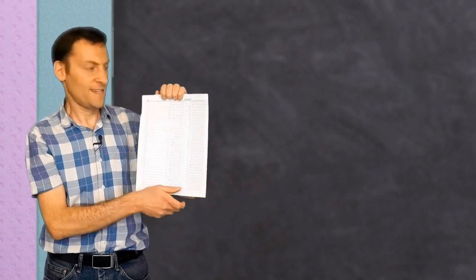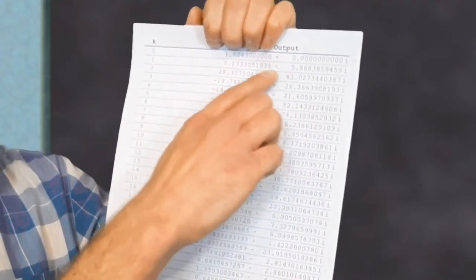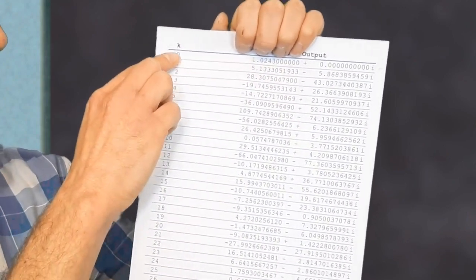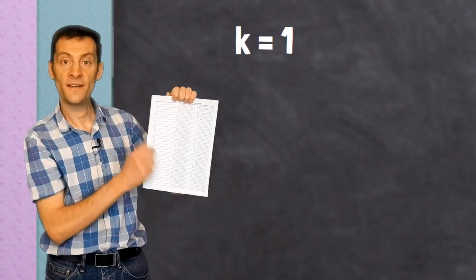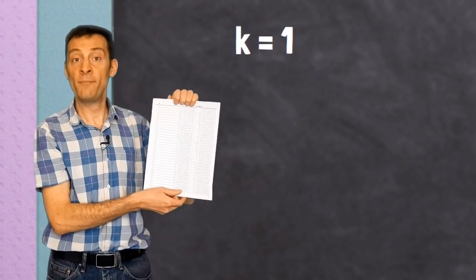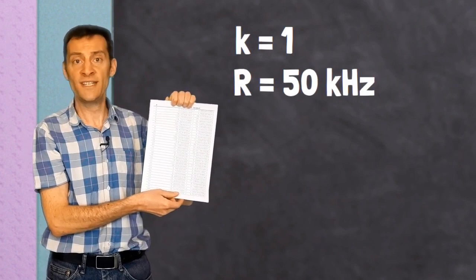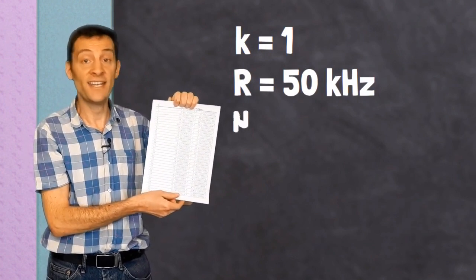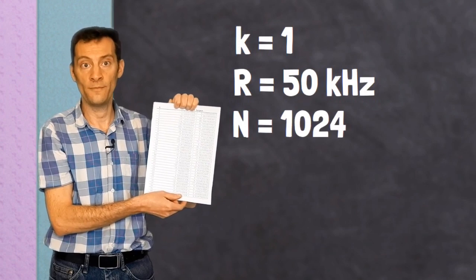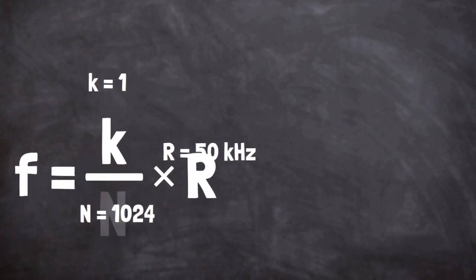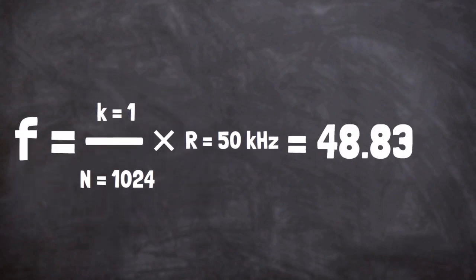Let's do an example. Say I wanted to find the frequency of the second item in the list. This has an index k of 1. Remember k starts from 0. I sampled the signal at a sampling rate r of 50 kHz, and there are 1024 samples in my signal, so n equals 1024. Plugging these values into the equation, we find that the frequency of this sinusoid in the list is 48.83 Hz.